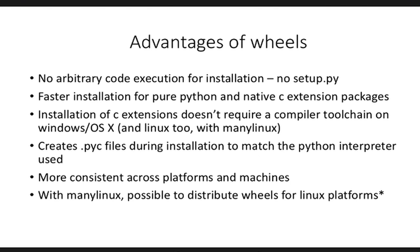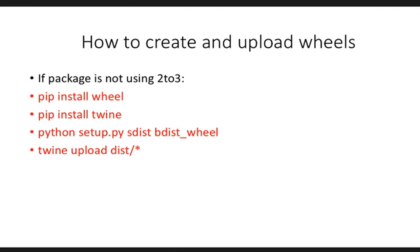How do you create and upload wheels? If your Python package is not using 2to3, it's fairly simple: just do pip install wheel, pip install twine — which is another package that makes it easy to upload things to PyPI — then python setup.py bdist_wheel, and twine upload dist/. When you run python setup.py bdist_wheel, it will generate a dist folder with everything included that can be shipped to another machine, unzipped, and moved to the right position. Twine upload dist/ will actually upload your wheel to PyPI.